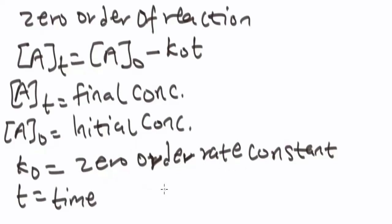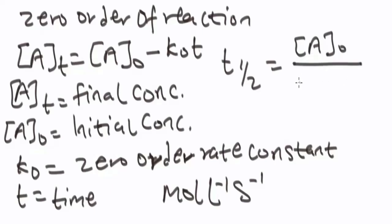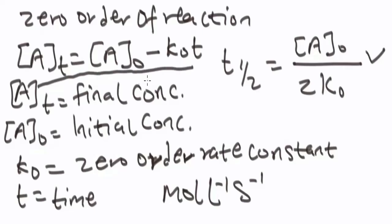Note that for the zero order reaction, the unit of the rate constant is mol per liter per second. The half-life of a zero order reaction is calculated using A_0 (initial concentration) over 2 times k_0 (zero order rate constant). Take note of this formula — this one is for the half-life of zero order reaction, and this one is for calculating the integrated zero order reaction.